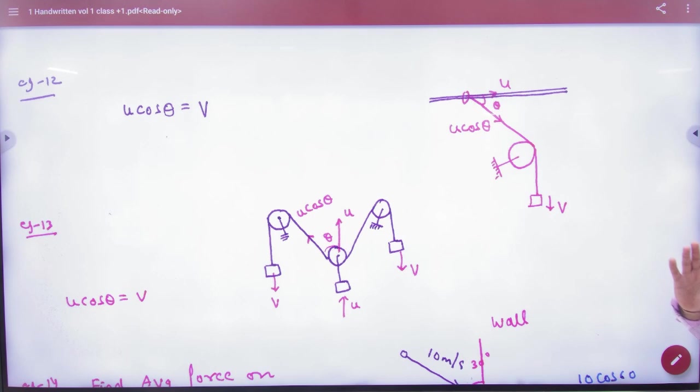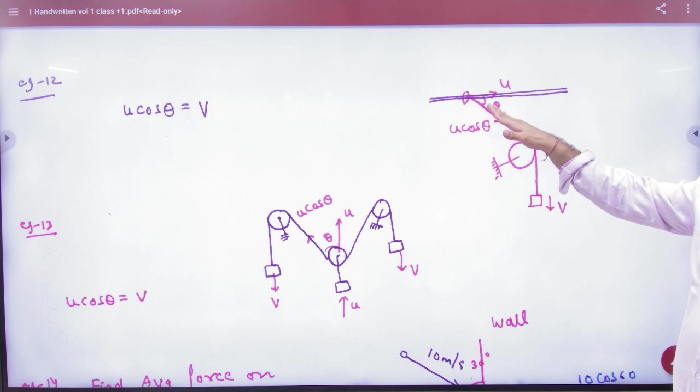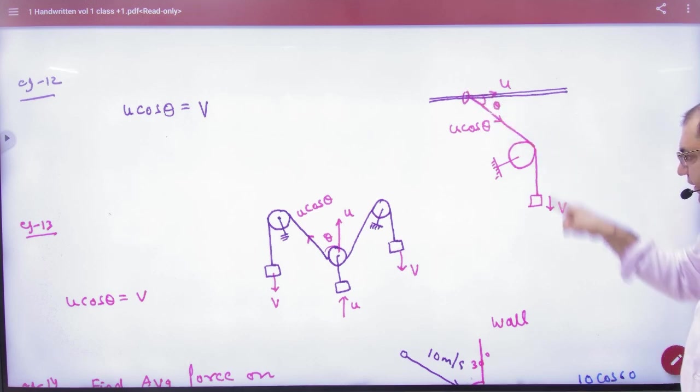Starts with u. u and v relation. Now string along velocity v. Its velocity here u. u is u cos θ. u cos θ is equal to v.